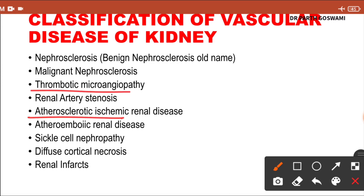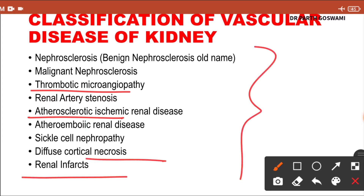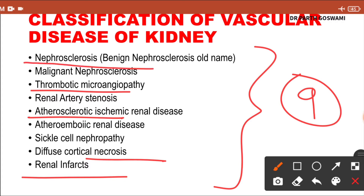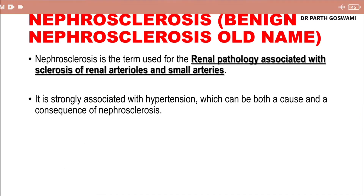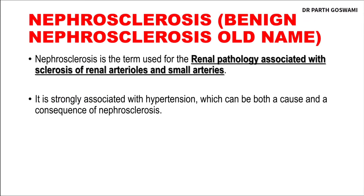If you see carefully, all these are interconnected because of thrombosis and atherosclerosis. There can be clot formation in the renal vessel, and that's why the blood supply to the renal vessels can be affected, and so the patient can develop necrosis and infarction as well. Among these nine categories, we are going to discuss benign nephrosclerosis in detail.